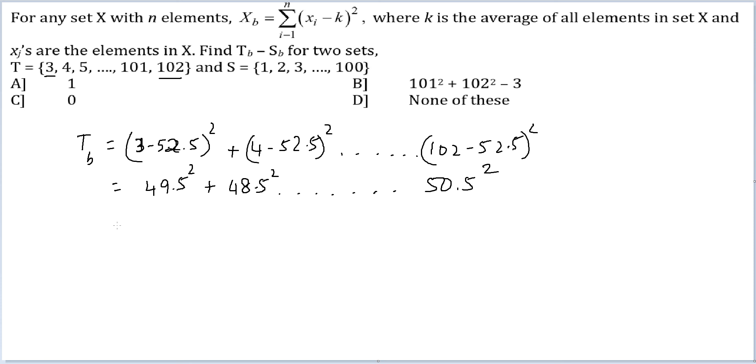Now, let's look at this. For S, S_D will equal, so 1 minus 50.5 whole square plus 2 minus 50.5 whole square. And this will be equal to 49.5 whole square. And this will go until, this last term I have written down incorrectly.